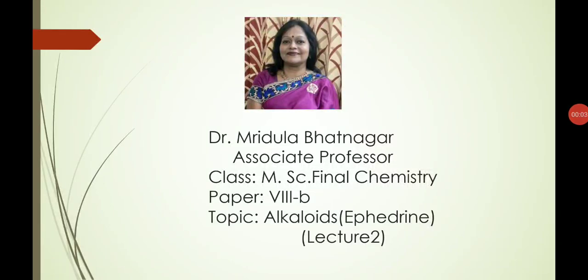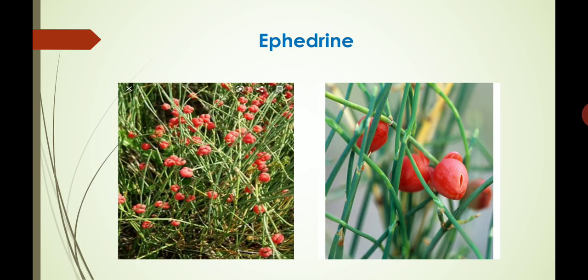Greetings for the day, dear students. In my second lecture on alkaloids, today I will discuss the structure or constitution of ephedrine. Ephedrine occurs along with five other alkaloids — namely pseudoephedrine, methyl ephedrine, methyl pseudoephedrine, norephedrine, and norpseudoephedrine — in the genus Ephedra. Although all these six Ephedra alkaloids were found to be the constituents of the Chinese drug mahuang, ephedrine was among the most important ones.